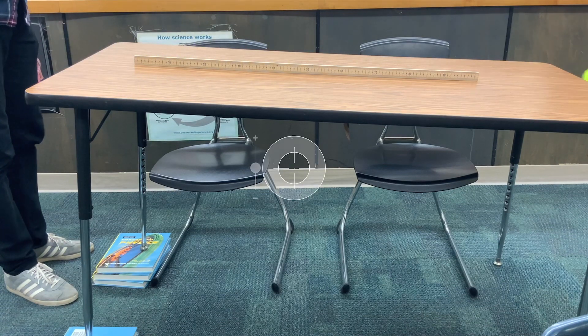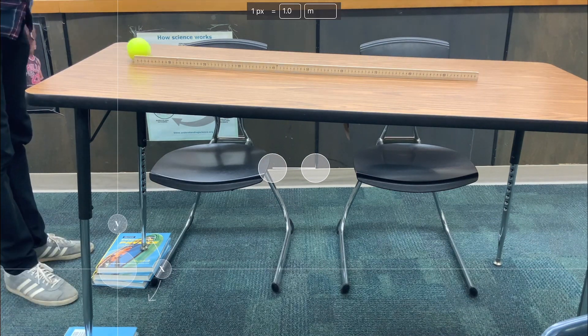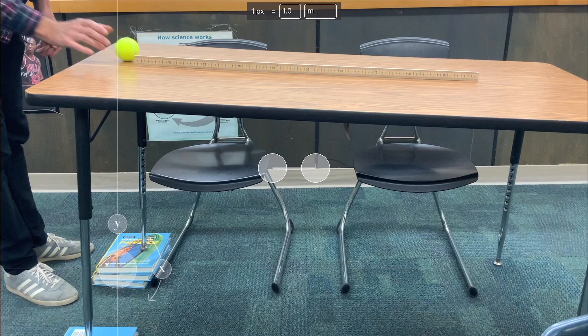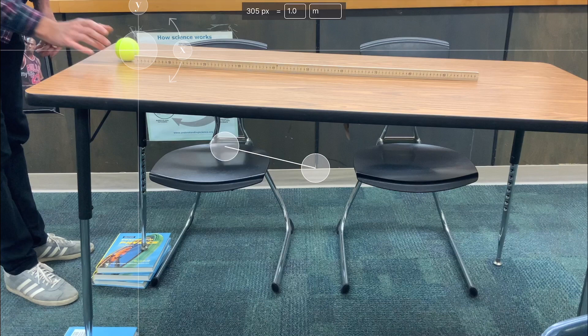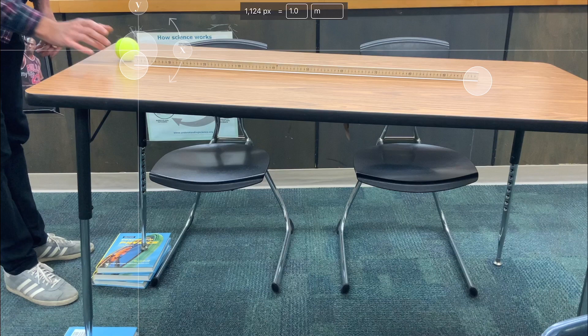Okay, so again like last time I'm first going to set the origin and the scale. I'm going to go back to the beginning to find the place where the tennis ball starts. I'm still going to track its front edge and then I'm going to grab these markers to tell the app how long one meter is. So I'm going to go from corner to corner on the meter stick. And so it's tracking - 1,124 pixels is now one meter.